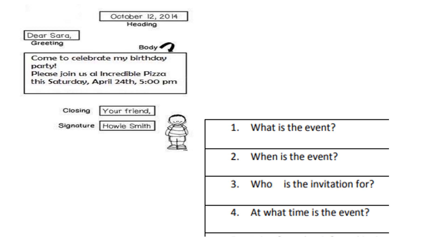Now, let's read the questions. Number 1: What is the event? It is a birthday party. Number 2: When is the event? It's on April 24th. Number 3: Who is the invitation for? It's for Sarah.